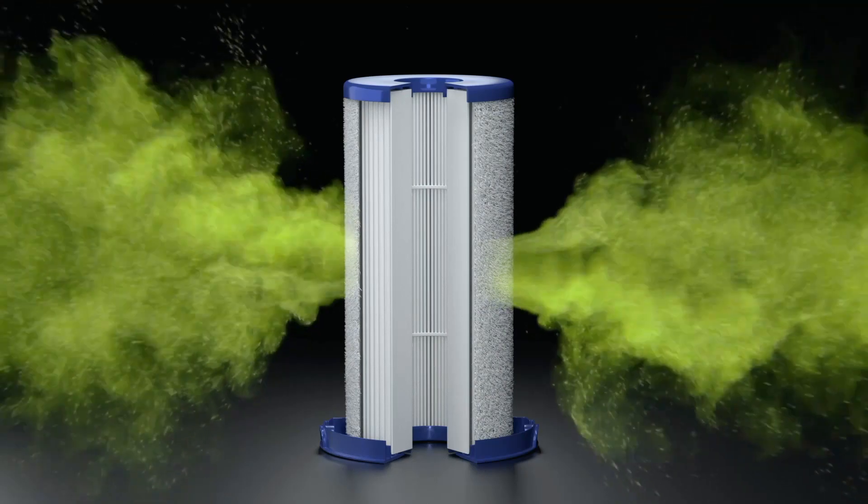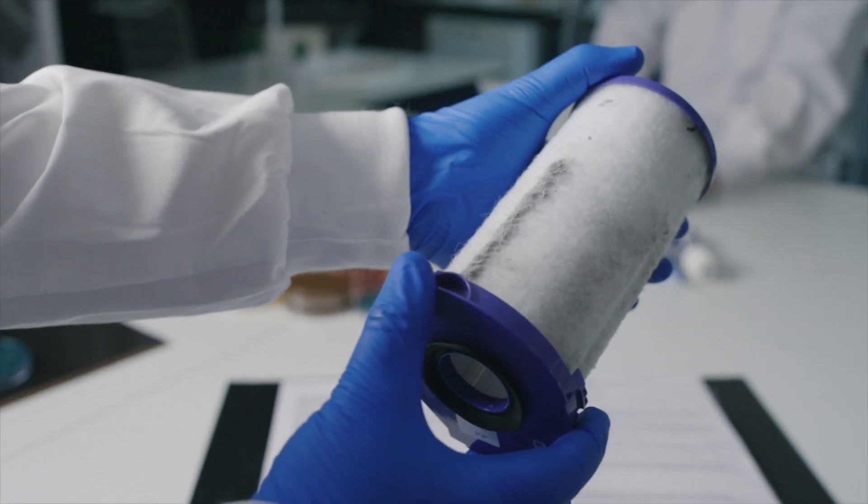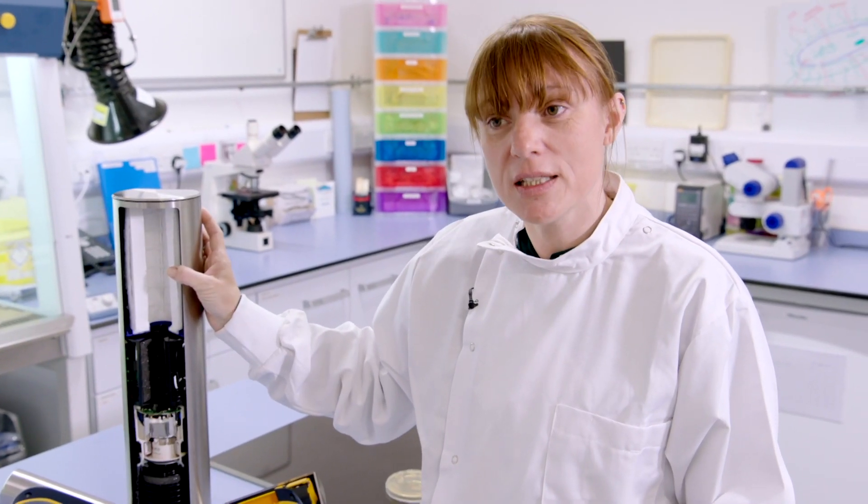All of our Dyson hand dryers are fitted with HEPA filters. These are important because they capture particles hundreds of times smaller than the width of a human hair. This means that your hands are dried with clean, not dirty air.